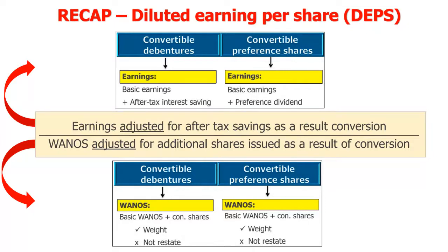With convertible debentures when calculating our WANOS, we do not restate any amounts. Instead, we only weight it in two scenarios: if the debenture was issued in one of the years under review, or if it was converted in one of the years under review. So it's only weighted if it's been issued or converted.